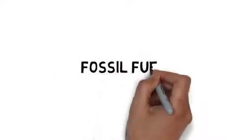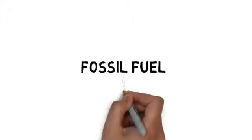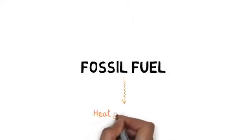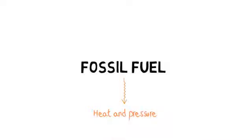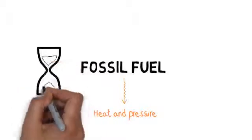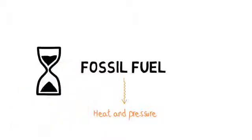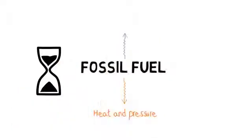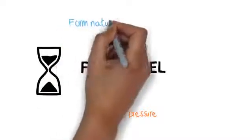Fossil fuels are created by tiny dead animals that sift down to the bottom layers in the sea. As more and more animals die, the ones underneath the layers of earth are subject to a lot of heat and pressure. Over millions and millions of years, they start to form rocks. When there's no oxygen present, they form natural gas or crude oil.